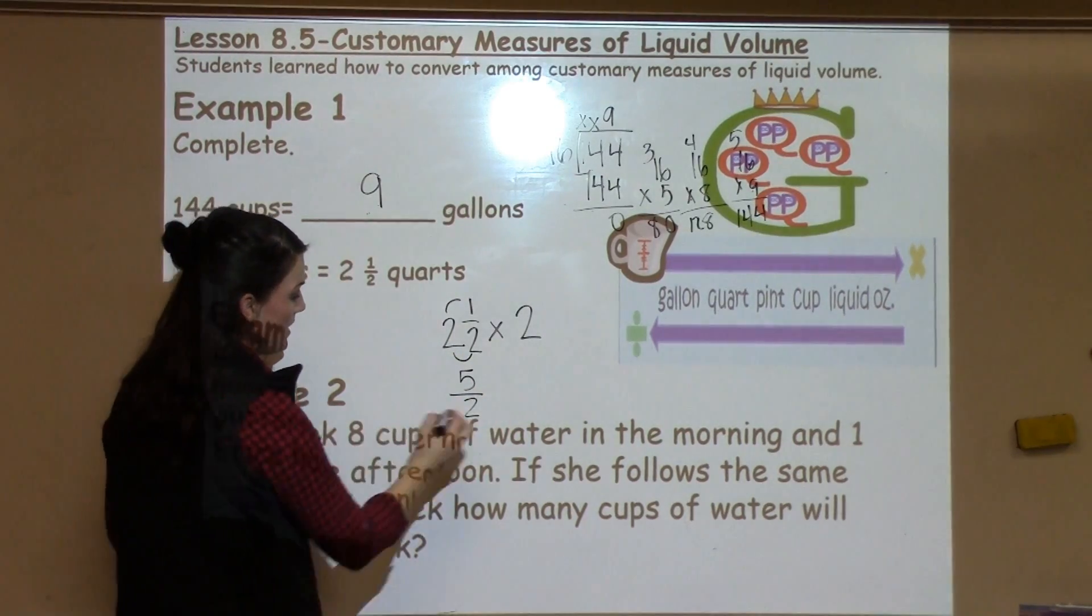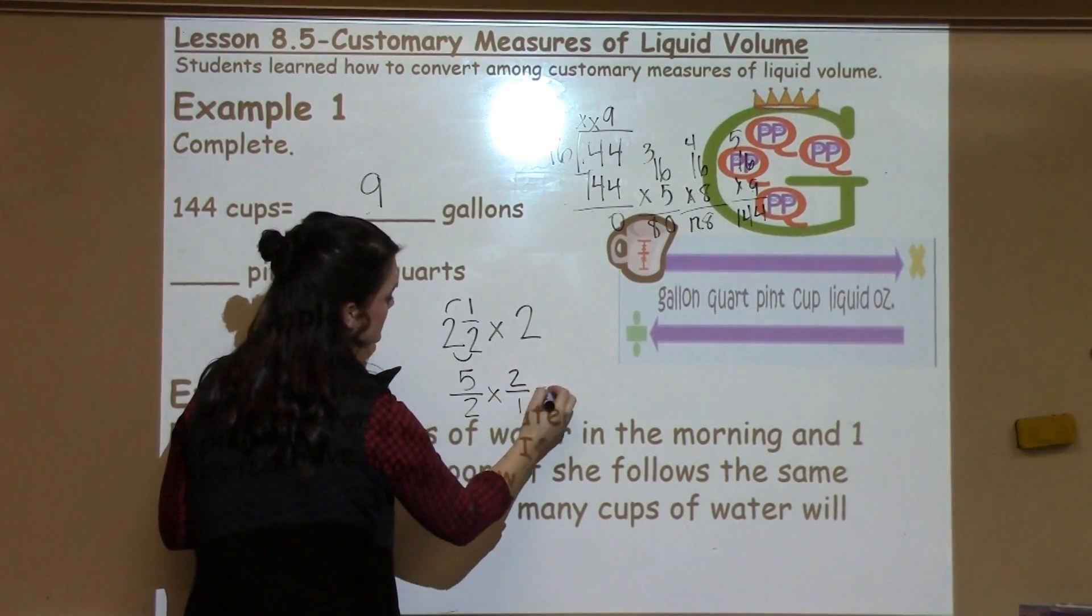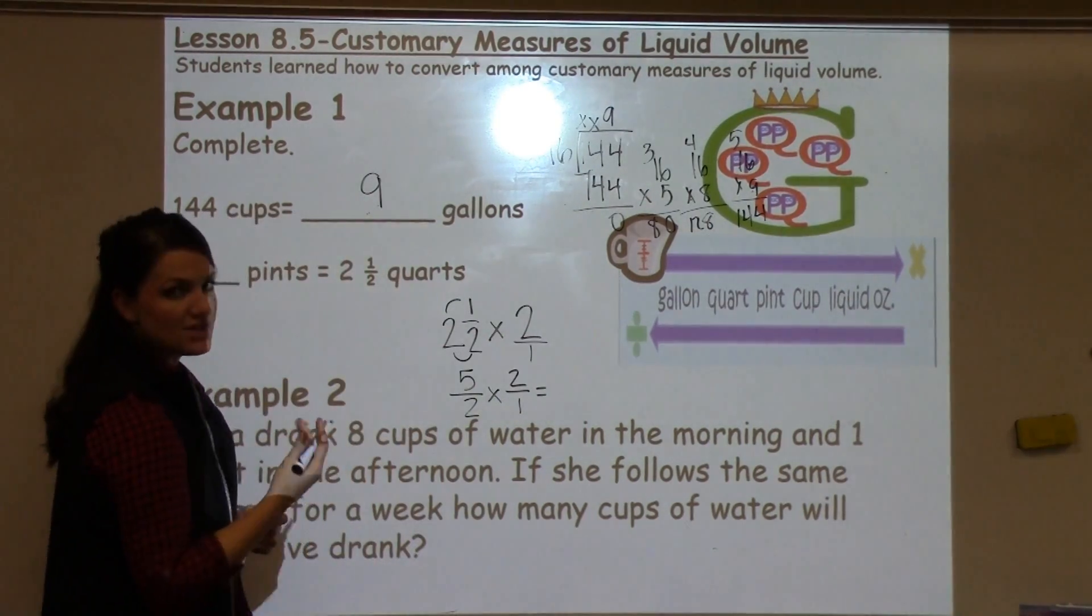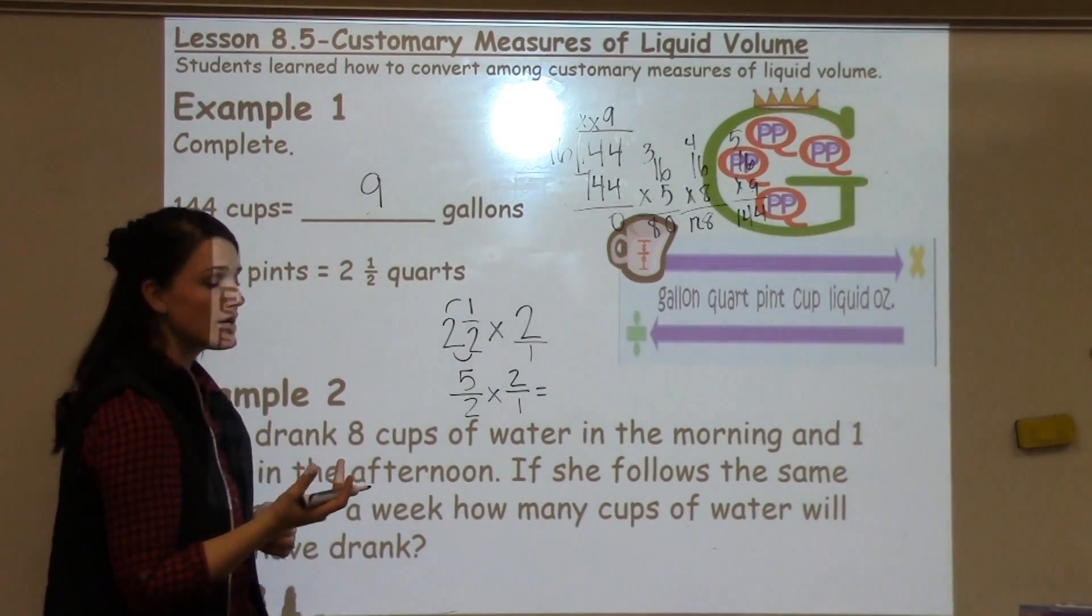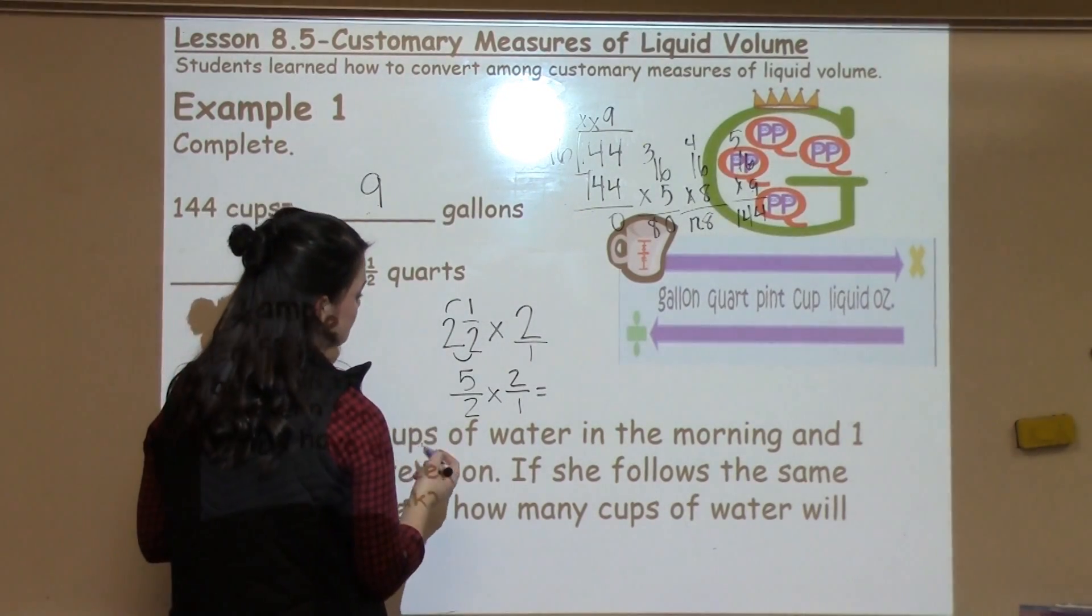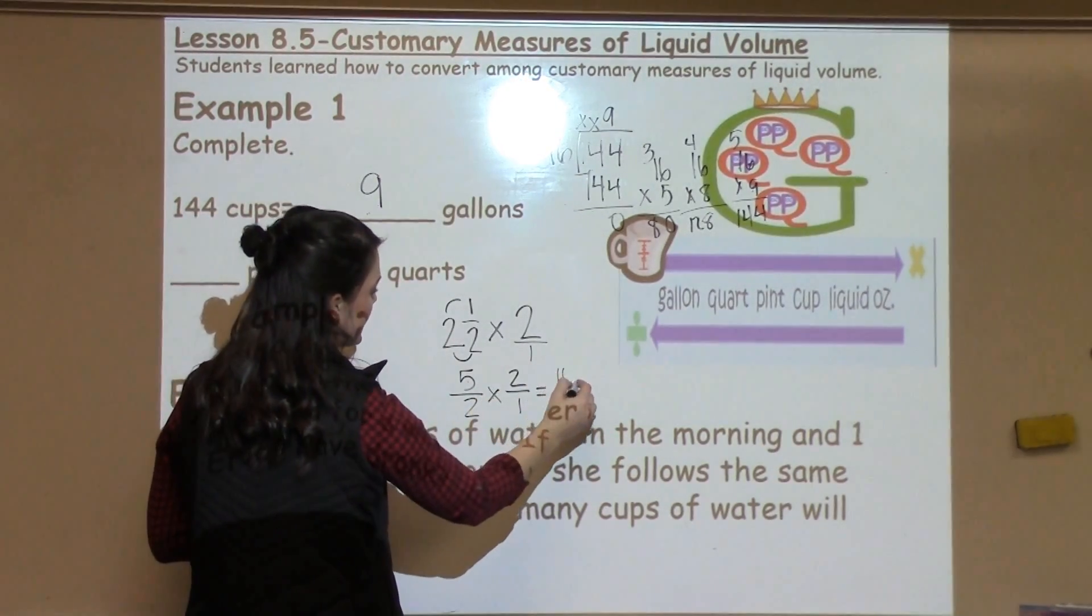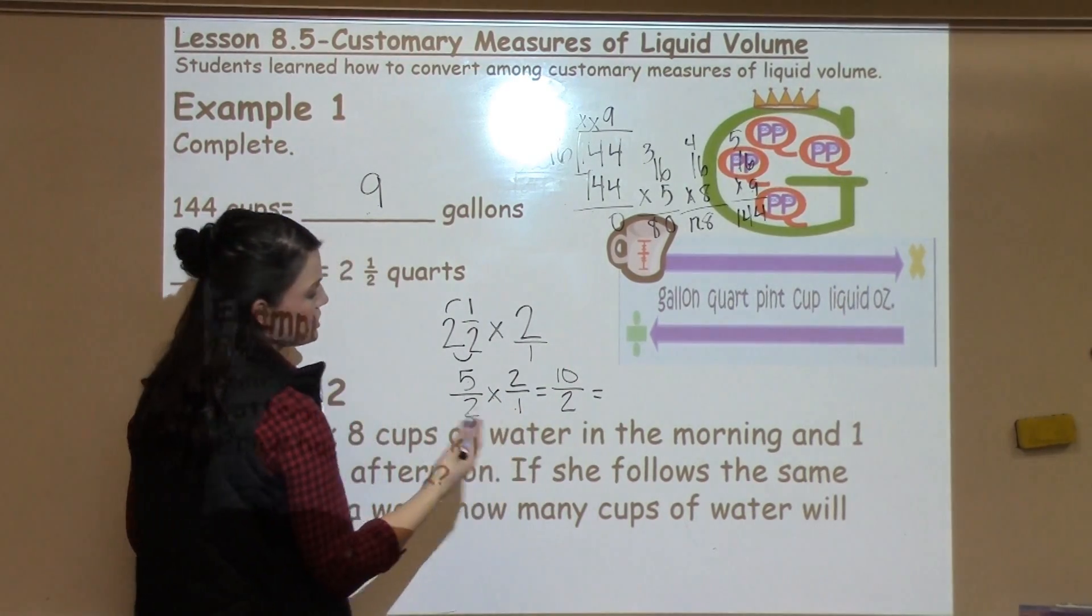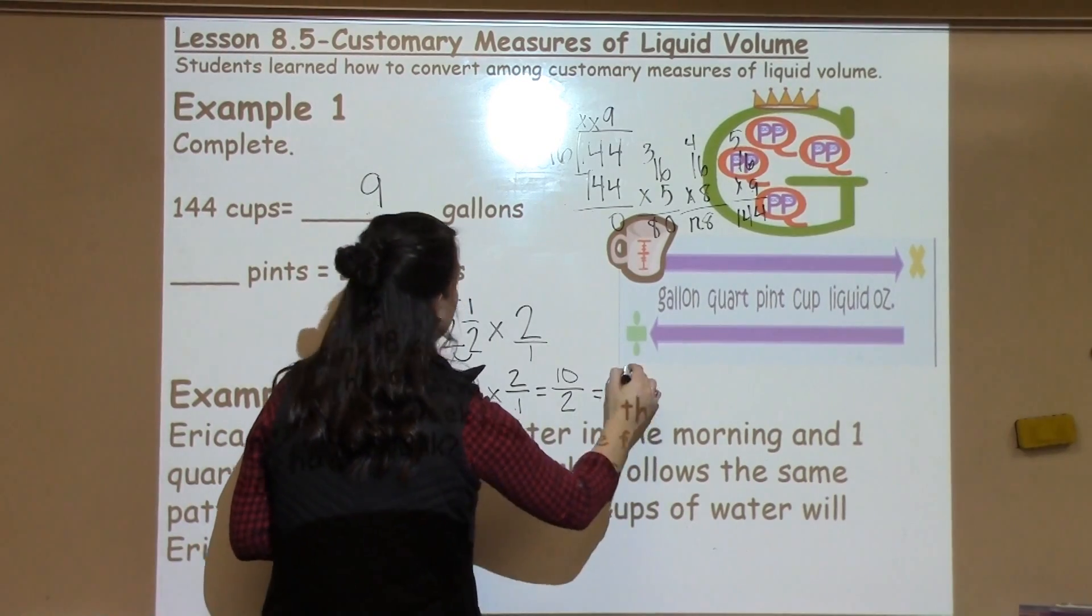The denominator stays the same. And then, you can go ahead and times by 2 over 1 because changing a whole number into a fraction, you can do that without changing its value by just placing it over 1. 5 times 2 is 10. 2 times 1 is 2. And I know 10 divided by 2 is 5.